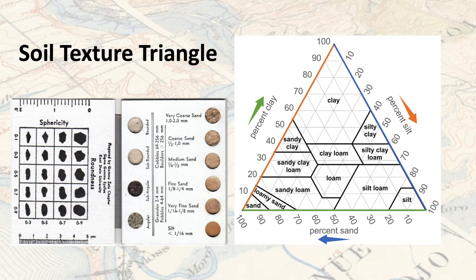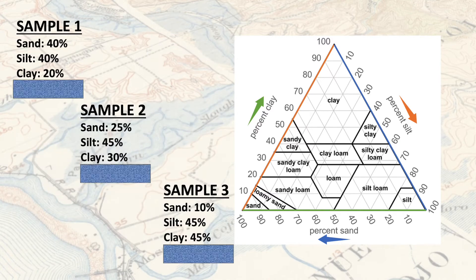For the next slide, I'm going to share three samples that we have taken in our hands, rubbed around in our fingers with a little bit of water, and came up with our percentages. Then we're going to learn how to plot these on the graph. Sample one has been identified as 40% sand, 40% silt, and 20% clay.